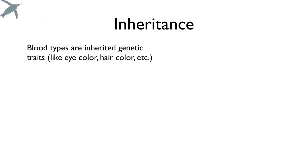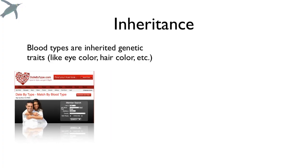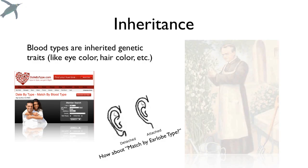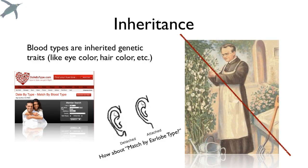Blood types are inherited genetic traits, just like all the other things that we inherit — which does again make me think about this 'date by type' thing. What if I can come up with a match by earlobe type? I mean, that makes about as much sense. Anyway, the thing that's confusing is that blood typing, the ABO system, is not inherited in Mendelian fashion.